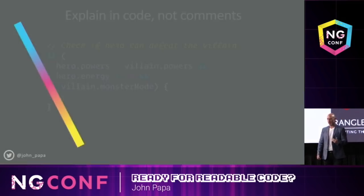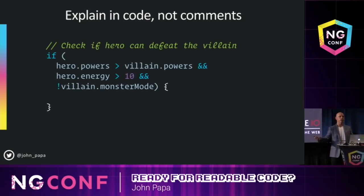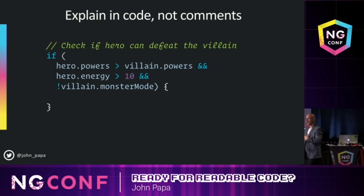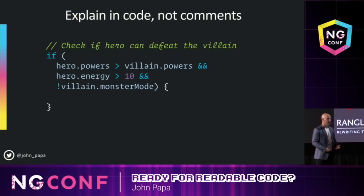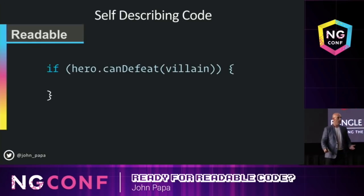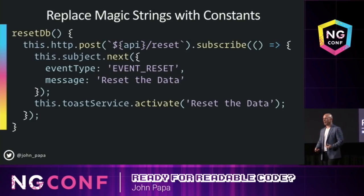Sometimes we look at comments as the way to provide context. But I think code is a better way. While a comment like 'check if the hero can defeat the villains in Tour of Heroes' works, what happens if this logic changes and the comments don't? How often do you honestly update the comments when you change code? Instead, self-describing code — write a function called 'hero can defeat villain.' Always opt for self-describing code over comments to describe a what.